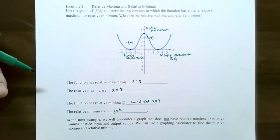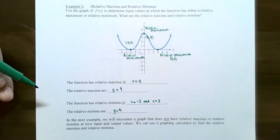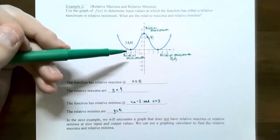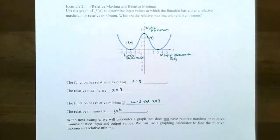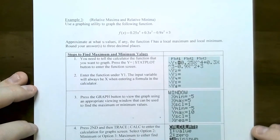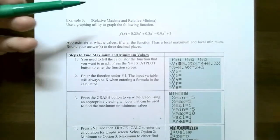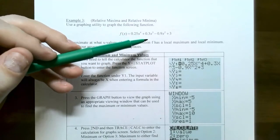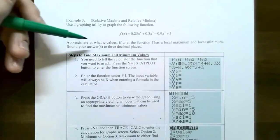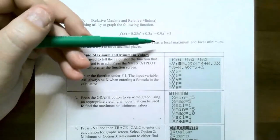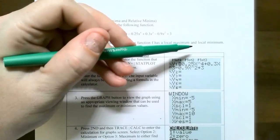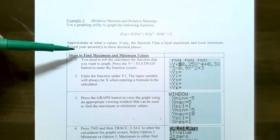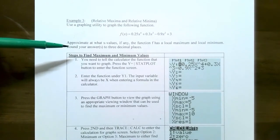You can also use a graphing calculator to find a relative max and min if it's not easy to identify them. Notice that in that example, the max and min occurred at whole numbers — that may not always be the case. In example three, we'll use a graphing utility to graph f(x) = 0.25x⁴ + 0.3x³ − 0.9x² + 3, approximate the x-values where the function has a local max and local min, and round answers to three decimal places.